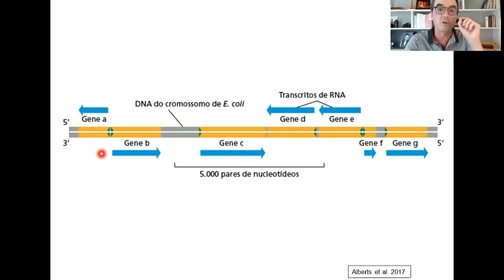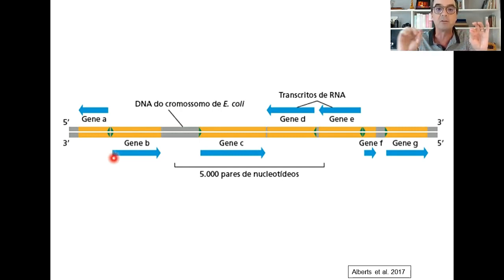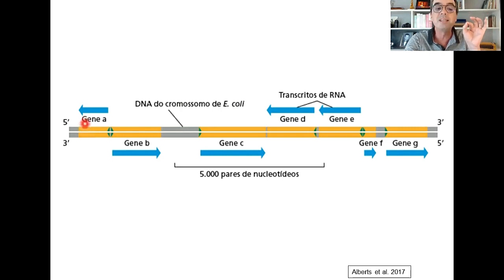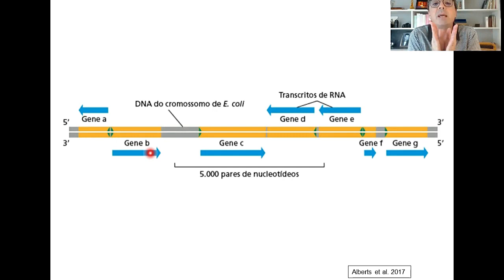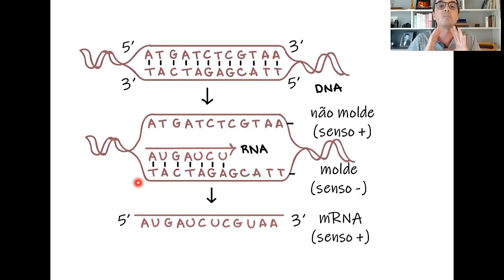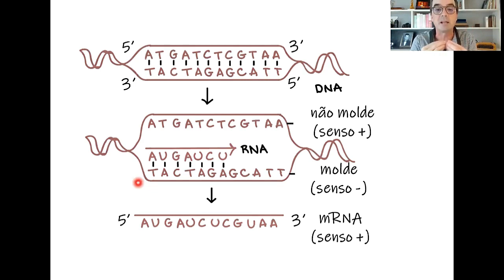O que essa figura traz de informação importante é que quando dizemos que apenas uma fita do DNA serve de molde na transcrição, estamos dizendo que para um trecho considerado um gene é uma fita, mas para o gene vizinho pode ser a outra fita complementar. Nesse exemplo, no gene A temos a fita molde sendo a superior, no gene B a fita molde é a inferior. Não precisa ser a mesma fita ao longo de toda a molécula de DNA, mas é a mesma fita para um pequeno trecho chamado de gene. Esse raciocínio vai ser importante para entendermos as classes de vírus baseadas em seu tipo de material genético.